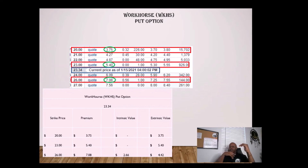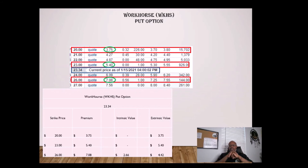The difference is when we look at the $26 strike price on the put side — that's in the money by $2.66. The premium is $7.08. You take the $2.66 of intrinsic value away from the $7.08, and what you have is $4.42 of extrinsic value. Time decay is going to eat that away.